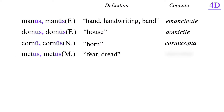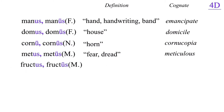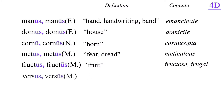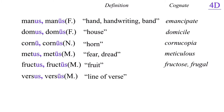Metus, metus, masculine, fear or dread. Fructus, fructus, masculine, fruit — and of course fructose comes from this. Versus, versus, masculine, a line of verse — and of course this is where we get the modern words verse and versatile.